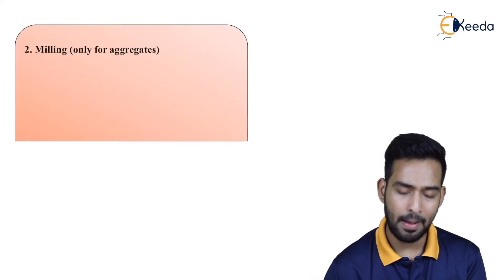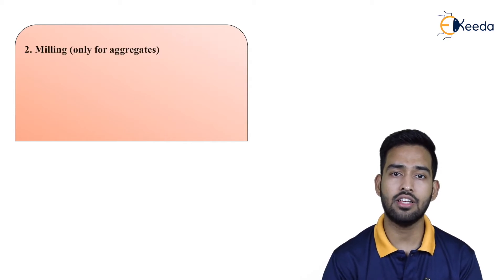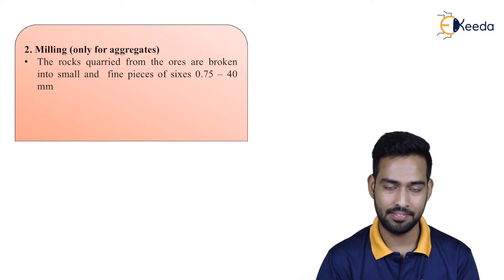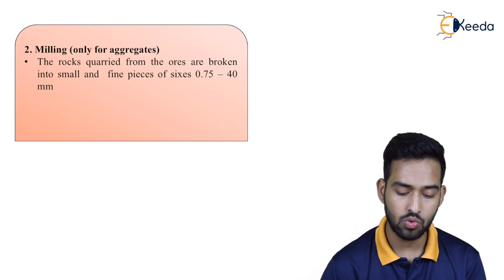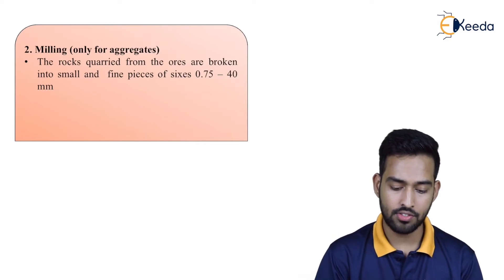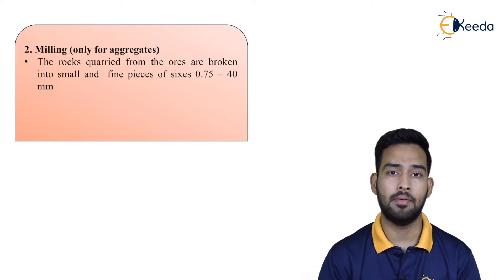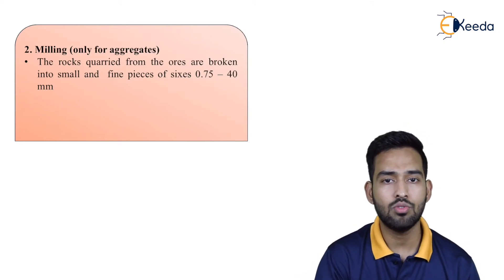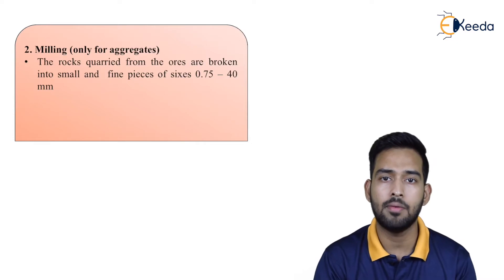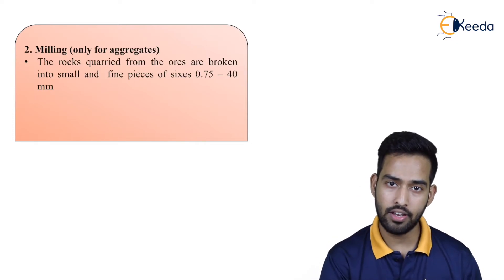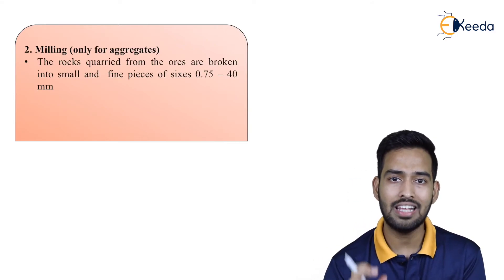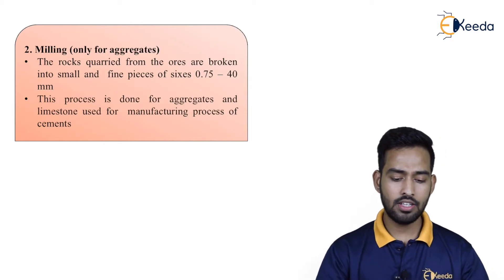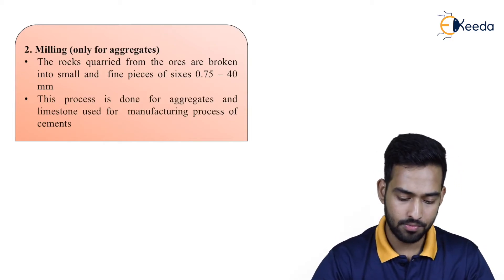The second stage is mining, which is done for aggregates. The rocks quarried from the ores are broken into small fine pieces of size 0.75 to 40 mm, since the aggregates used on site vary in that range. This process is also done for limestone used in the manufacturing process of cement.